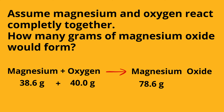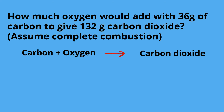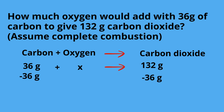A slight variation of this: how much oxygen will react with 36 grams of carbon to give 132 grams of carbon dioxide, assuming complete combustion? Let's set up the problem. We have the carbon, oxygen is our x, and here is our carbon dioxide mass. Solve for x — subtract 36 from both sides, so x equals 96 grams.